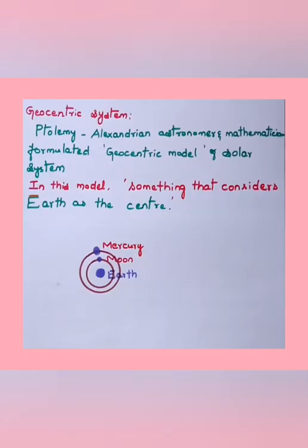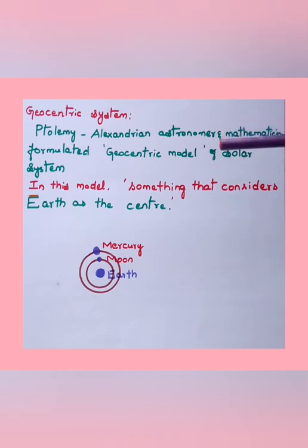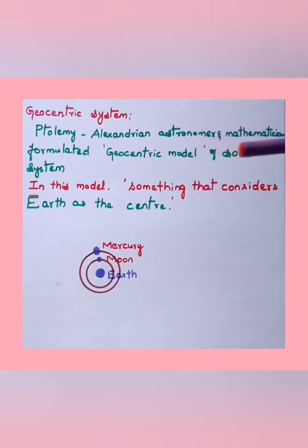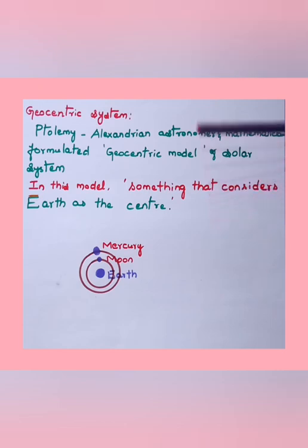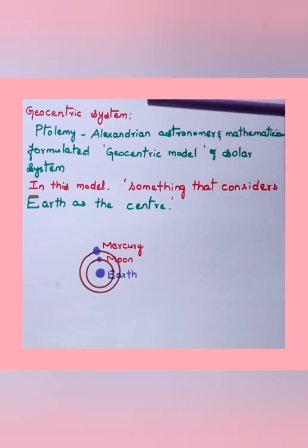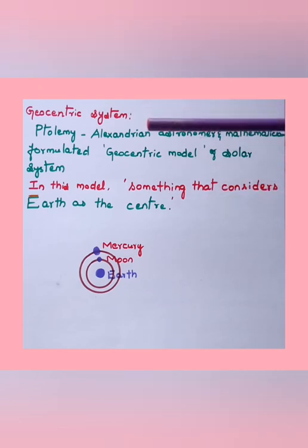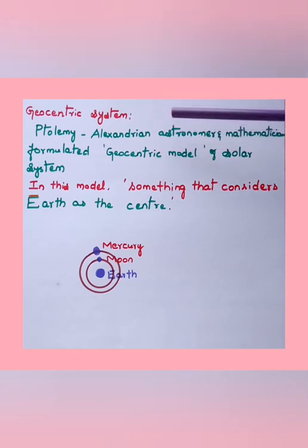When the present solar system arrangement was studied and put in a particular order, there were different theories and different explanations. Among them there are two main systems: the geocentric system and the heliocentric system.